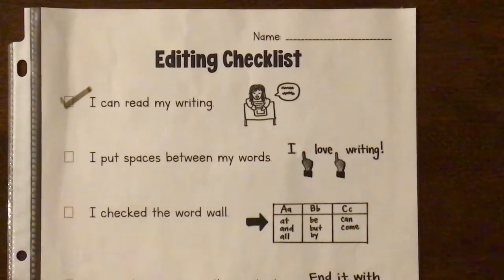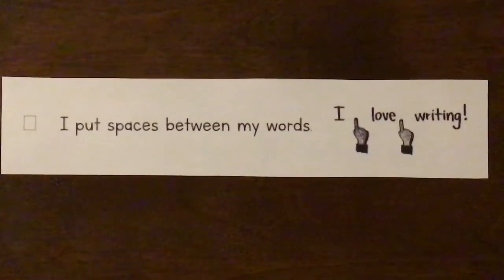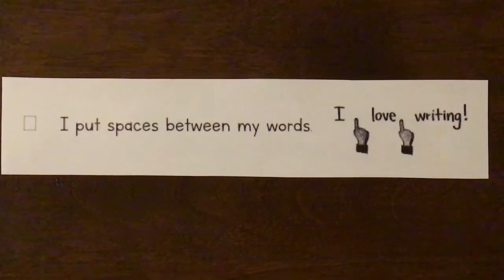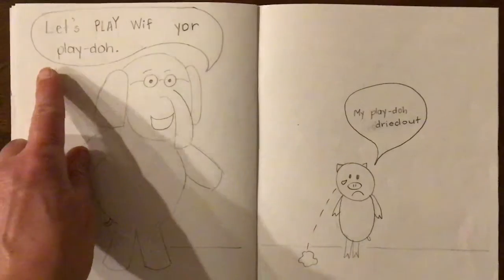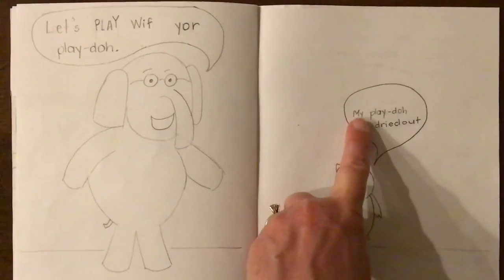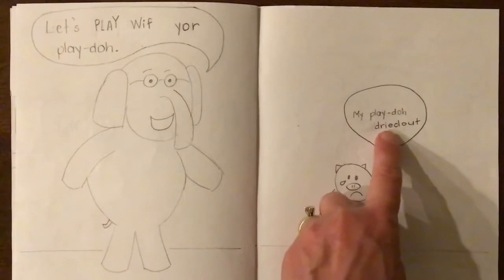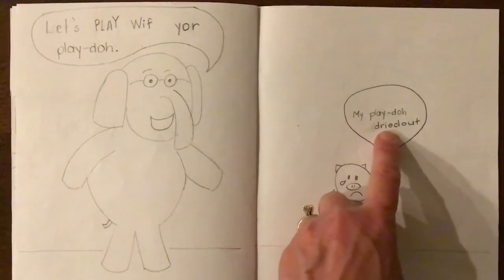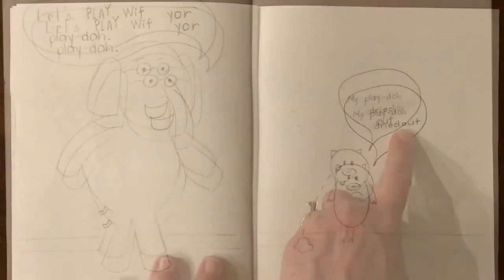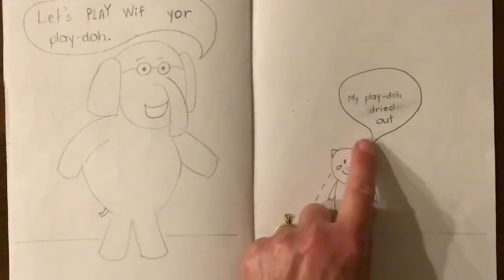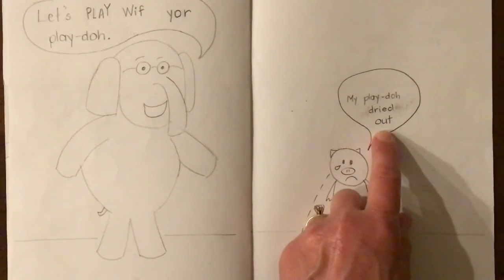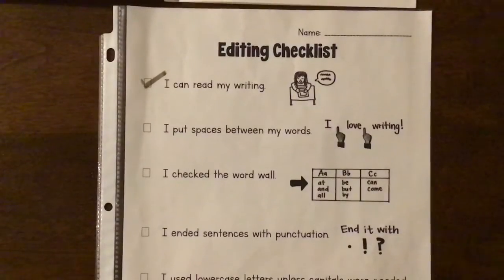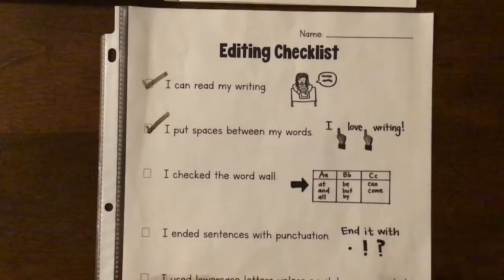Now I'm ready to do the second part. I'm going to focus on whether or not I put spaces between my words. I see good spaces between each word on this page. Let's check over here. Oh dear, look right there — there's no space between the word 'dried' and 'out.' I need to edit that. I erased the word 'out' and put it down below so that it would be easier for the reader to read. Now I can check off the second part of my editing checklist.